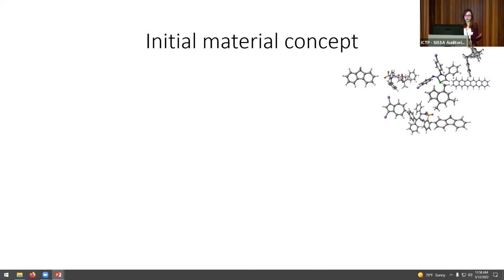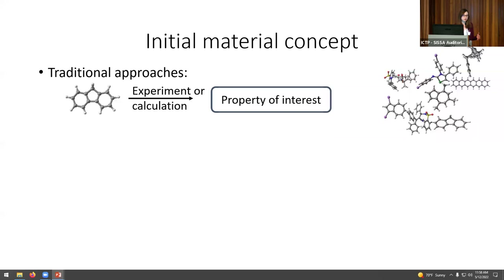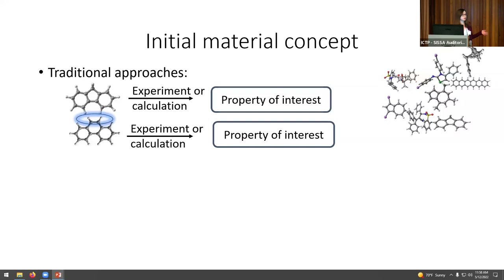There are several ways to come up with a material. The most traditional approach is to draw one molecule that already exists, do an experiment or calculation to get the property of interest, then slightly change the molecule — for instance, add a carbon atom — do another calculation, get another property, and compare. This way you learn what to change to reach the desired property, but this takes a lot of time.